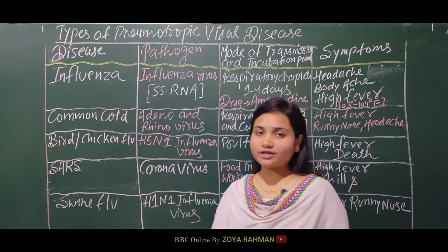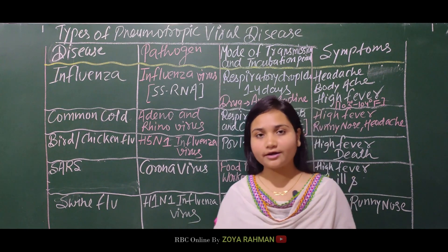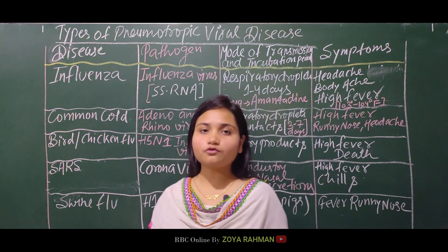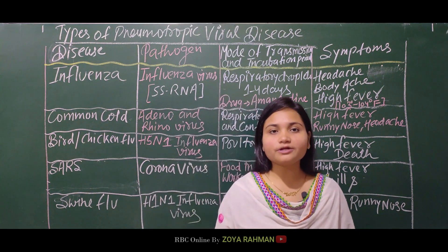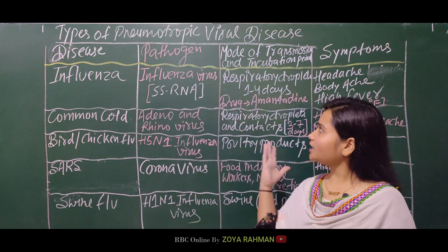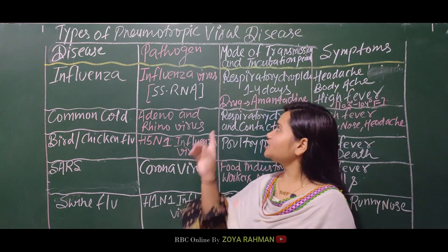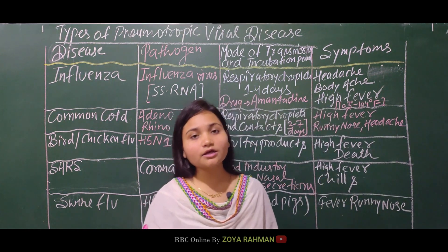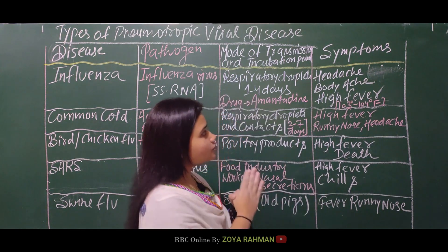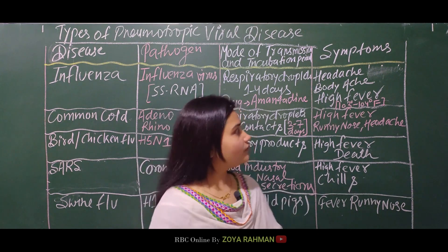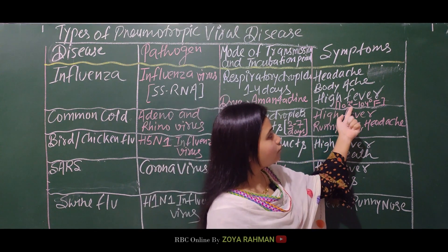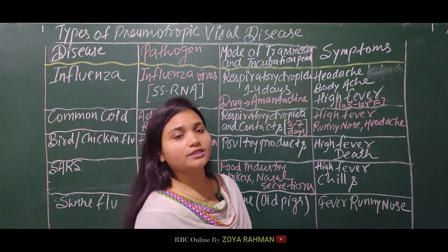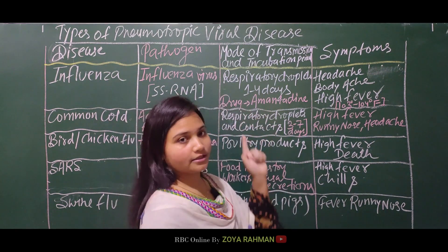The first pneumotropic disease is influenza. It is caused by a single-stranded RNA virus and spreads via respiratory droplets. The incubation period is one to four days. Symptoms include headache, body ache, and high fever of 103 to 104 degrees Fahrenheit. The drug used is amantadine.